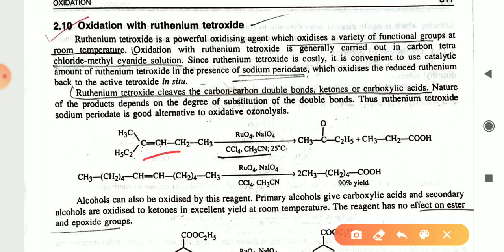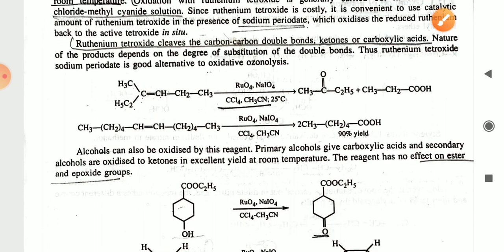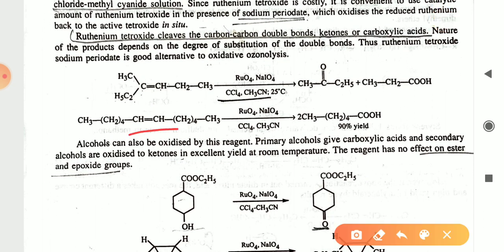Here you can see a carbon-carbon double bond in the presence of ruthenium oxide and sodium periodate in CCl4 and CH3CN solution at 25 degrees centigrade — it gives a ketone and a carboxylic acid. In another example, the carbon-carbon double bond with the same reagent converts to a carboxylic acid in 90% yield.